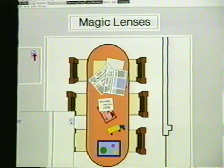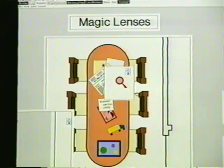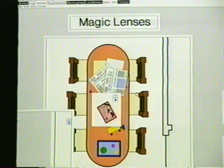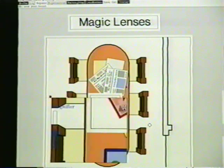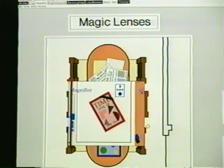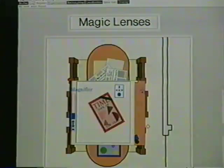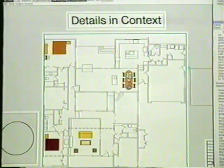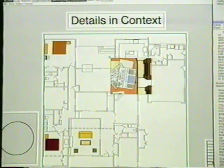This second lens is a filter that shows only red objects. Overlapping the two filters composes their effects. When we place the magnifier lens over the red objects lens, we see that this little red object is a Time magazine. Magic lenses can be used to modify a scene's appearance in small regions while leaving the rest of the scene alone as context.